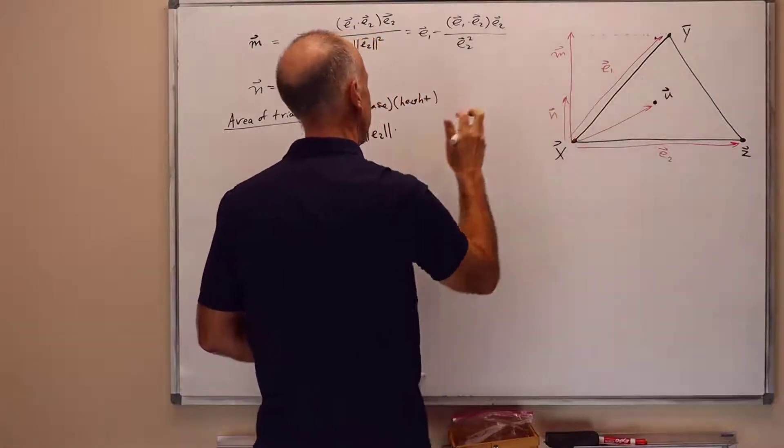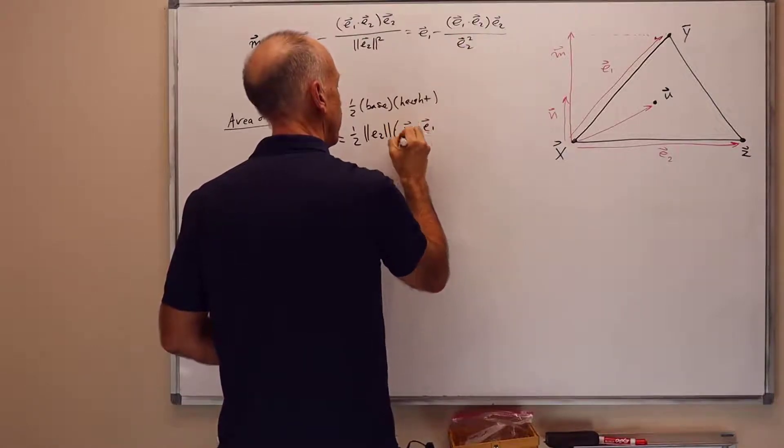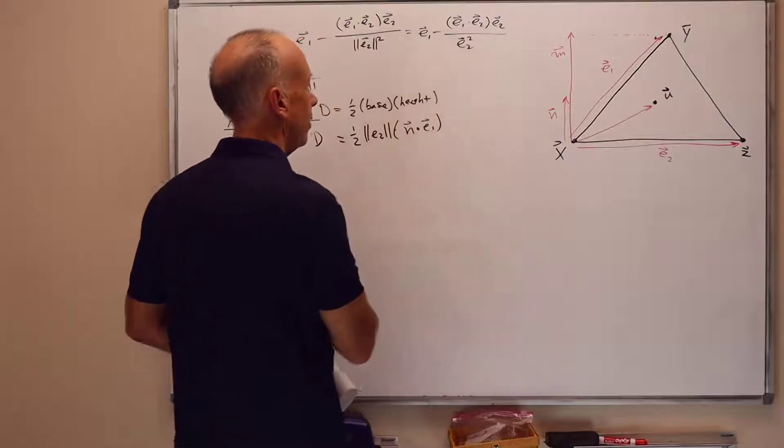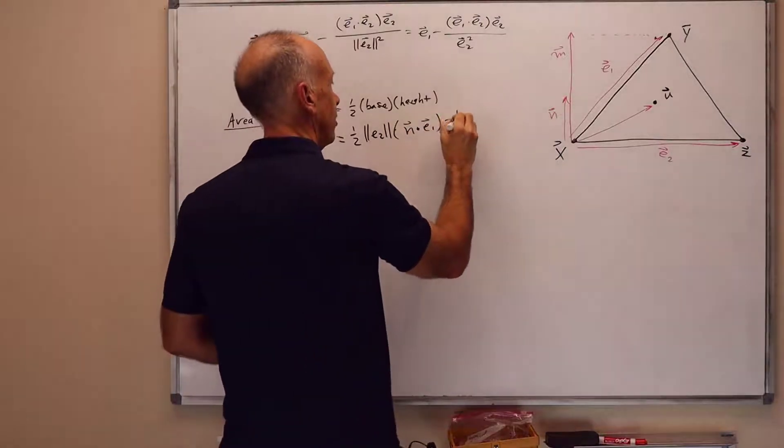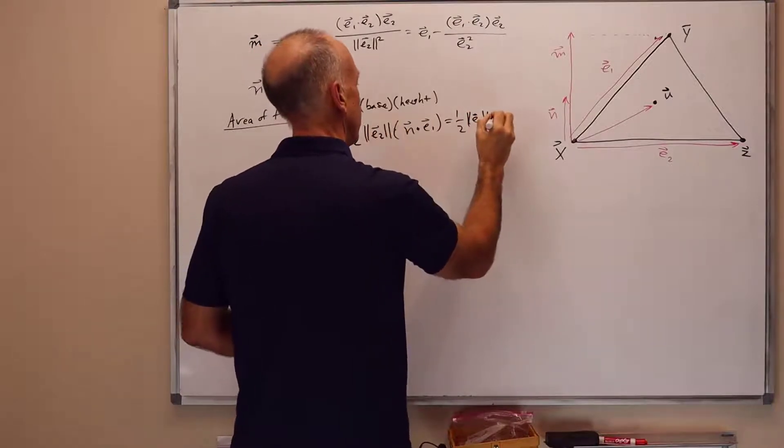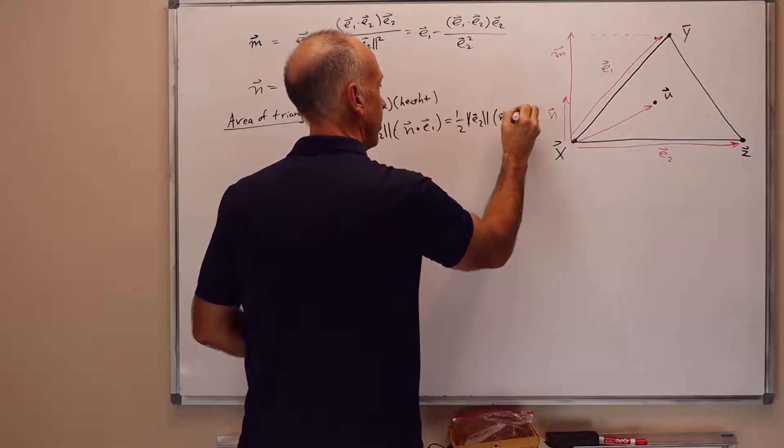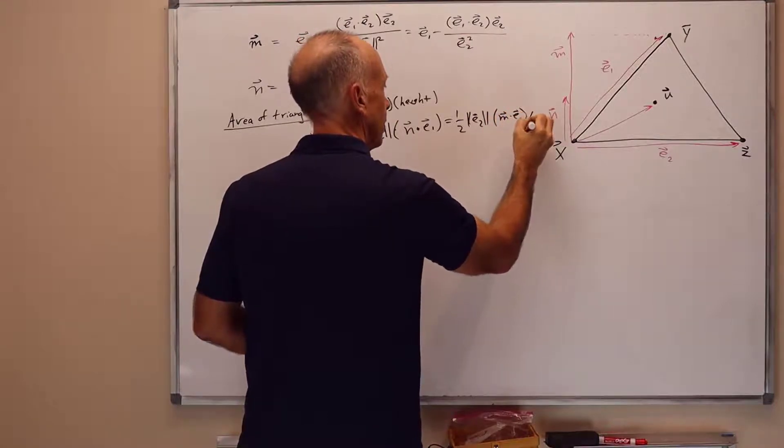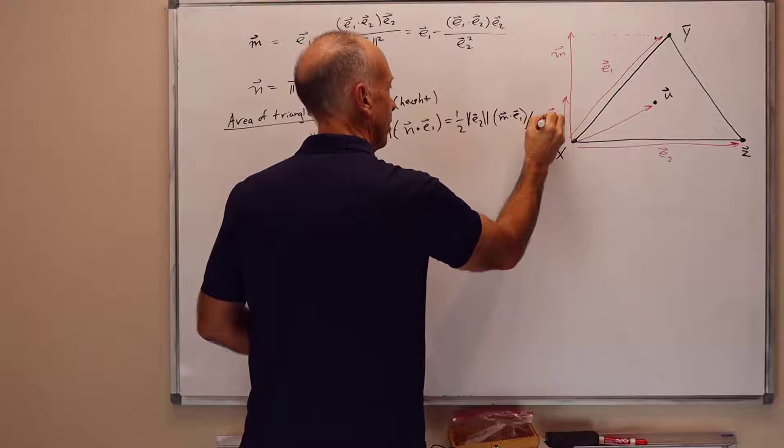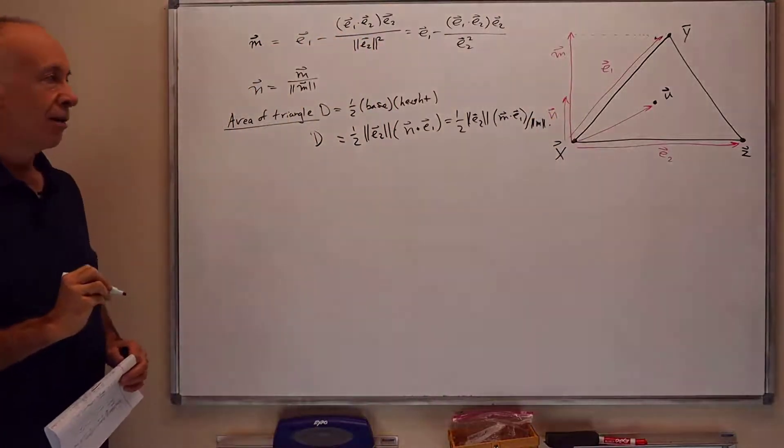And the height is n dot y. Sorry, it's n dot e1. So that's equal to n dot e1, dot product. And of course that's equal to one-half norm of e2 times m dot e1 divided by the magnitude of m. And that's the area of the whole triangle.